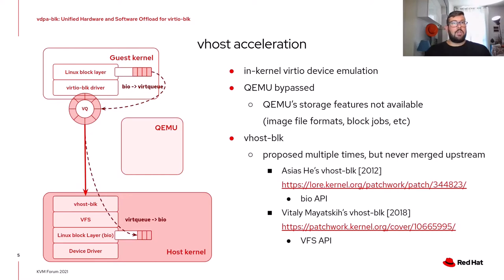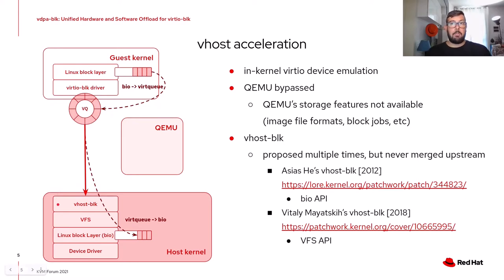One possibility to reduce the path a request has to follow is to move device emulation from QEMU to the host kernel. We can use the vhost framework to implement an in-kernel VirtIO block device emulation. In this way, we bypass QEMU, reducing overhead since we have fewer layers to cross, but we cannot use QEMU storage features anymore — so this approach is fine only for raw files or block devices. Several implementations have been proposed in previous years, but none have been merged upstream because they didn't show impressive performance.